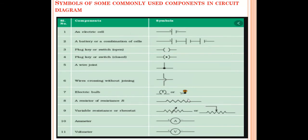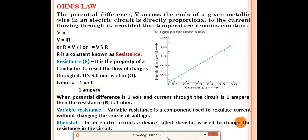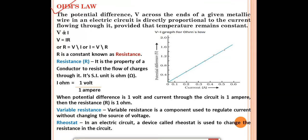Next is Ohm's Law — very important, asked in every board exam. The statement: the potential difference V across the ends of a given metallic wire in an electric circuit is directly proportional to the current flowing through it, provided that temperature remains constant. So potential difference V is directly proportional to current I, with temperature constant.